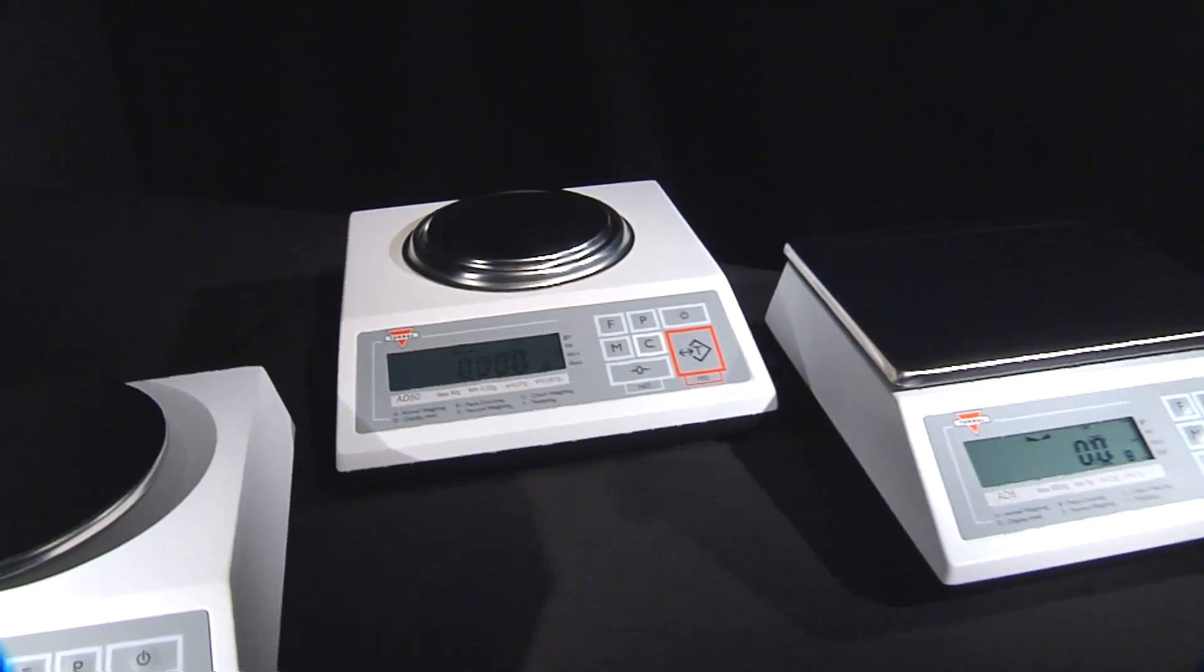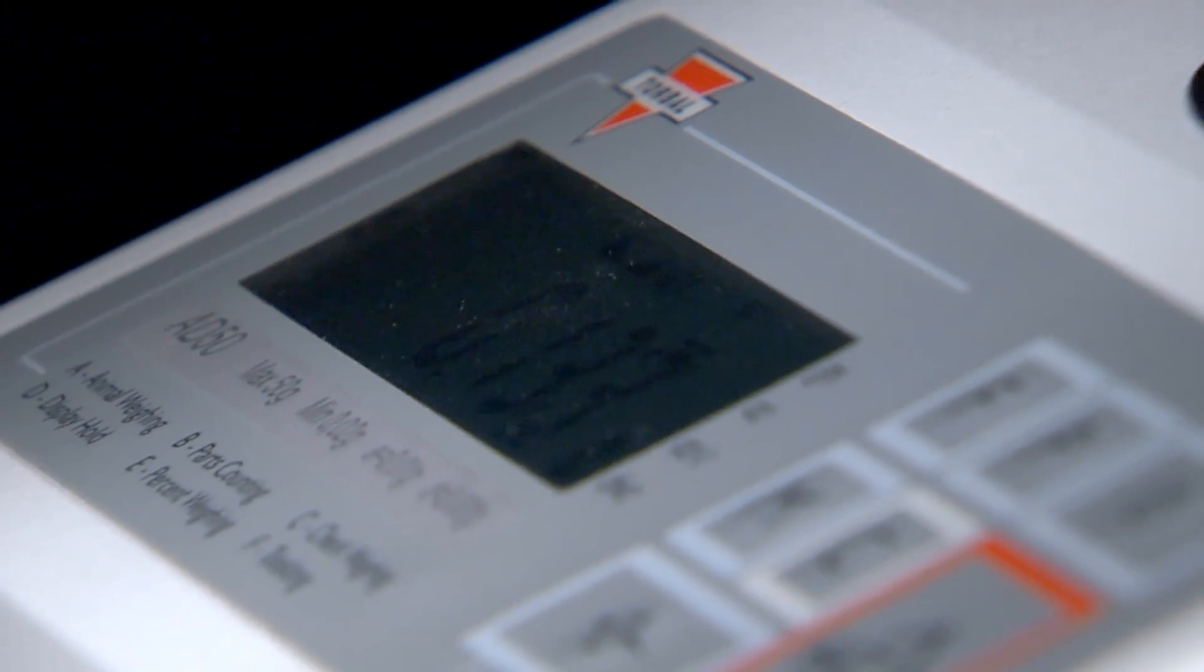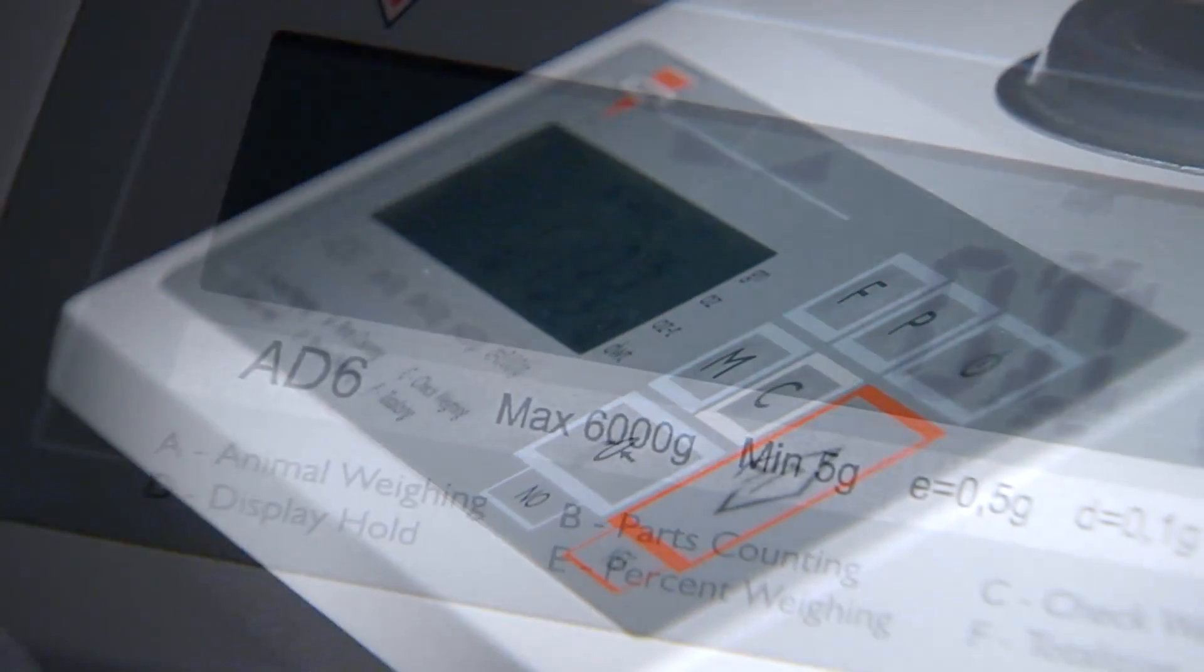All Torbal digital scales have a sealed front panel that protects the keys and the LCD display from dust and accidental spills.